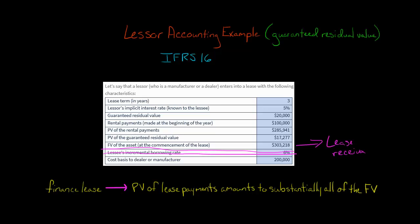I'm going to show you a table with how we calculate the interest revenue for the lessor and the journal entries. Because there's a guaranteed residual value, the sales revenue is also going to be $303,218. So when the lessor commences the lease, they're going to book a sale of $303,218 and recognize cost of goods sold of $200,000 — their cost basis. They'll recognize $303,218 in sales revenue and $200,000 in cost of goods sold, giving a selling profit of $103,218. Then they'll recognize interest revenue throughout the lease.